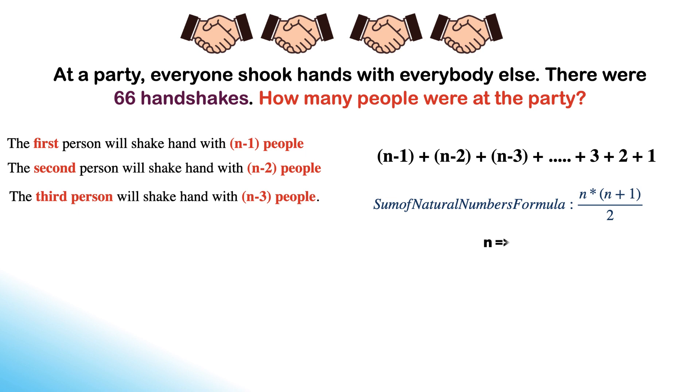In this case, we know that n is n minus 1, hence the formula becomes n minus 1 times n minus 1 plus 1 over 2. After simplification, the formula becomes n times n minus 1 over 2.